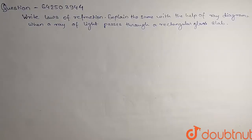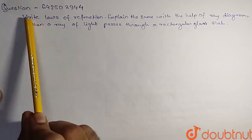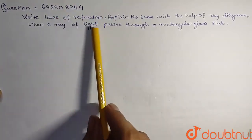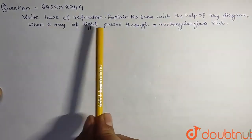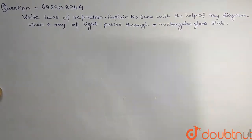Hello everyone, welcome to Doubtnet. So the question given here is: write law of refraction, explain the same with the help of a ray diagram when a ray of light passes through a rectangular glass slab.